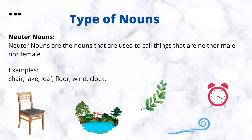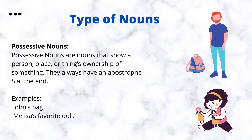Neuter nouns are the nouns that are used to call things that are neither male nor female. Examples: chair, lake, leaf, floor, wind, clock. Possessive nouns are nouns that show a person, place, or thing's ownership of something. They always have an apostrophe s at the end. Examples: John's bag, Melissa's favorite doll.